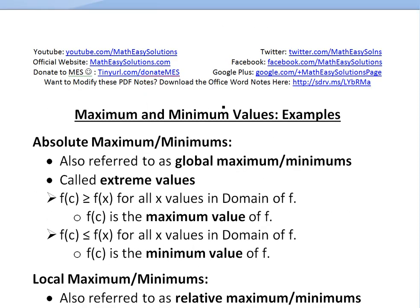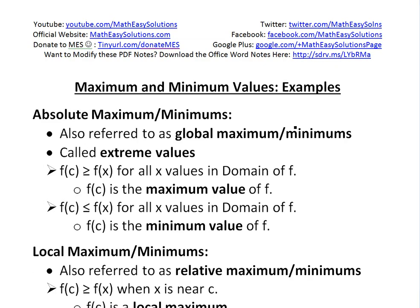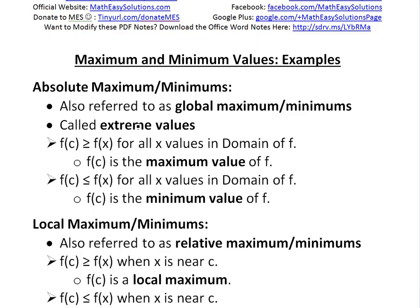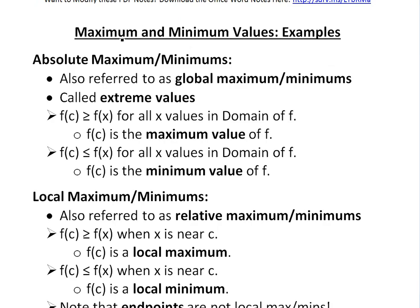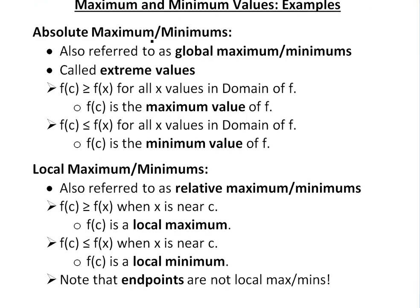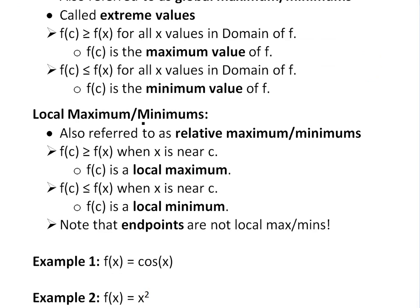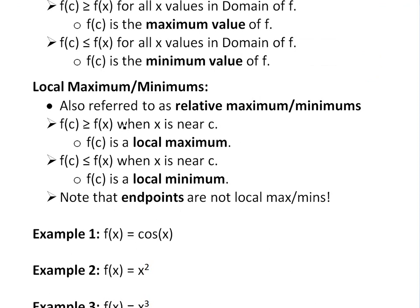Hi, it's time for another Math Easy Solution video to discuss maximum and minimum values, looking at some examples. In my earlier video I went over an introduction and the definitions for local maximums and absolute maximums. Basically, absolute maximums and minimums are the highest and lowest point or value of a function f, and local maximums and minimums are the relative max and min of f of x.